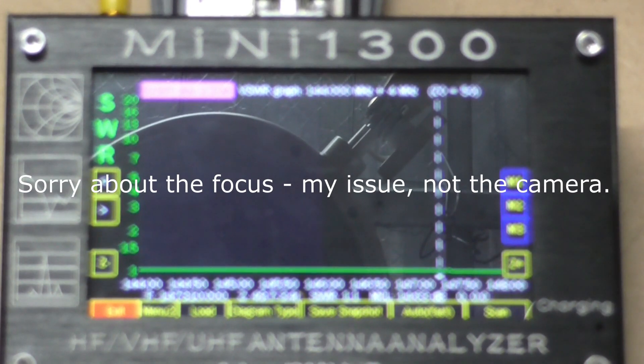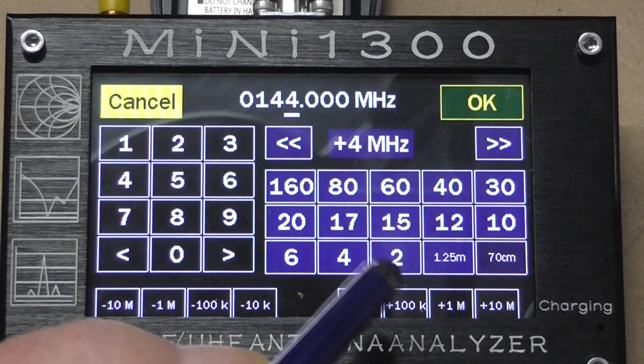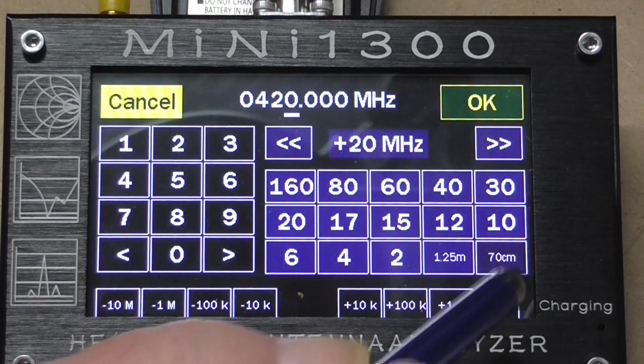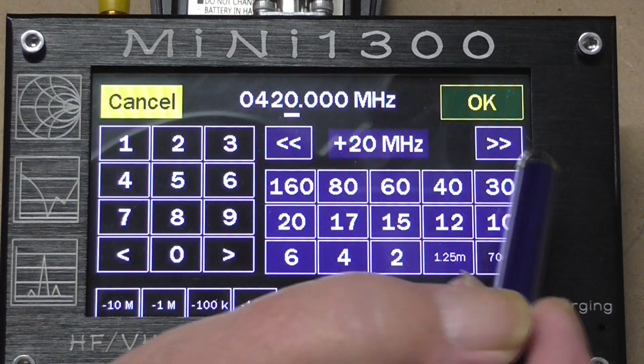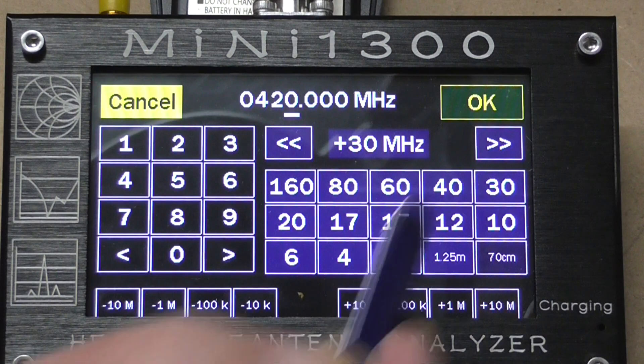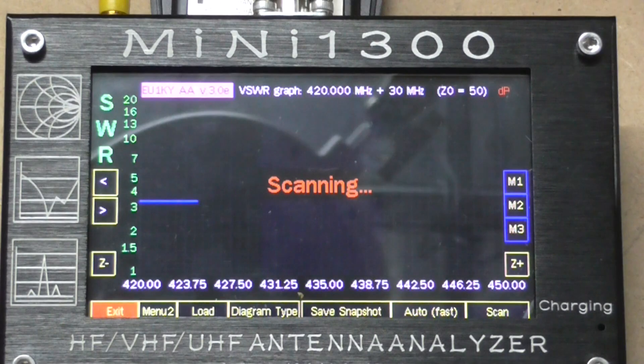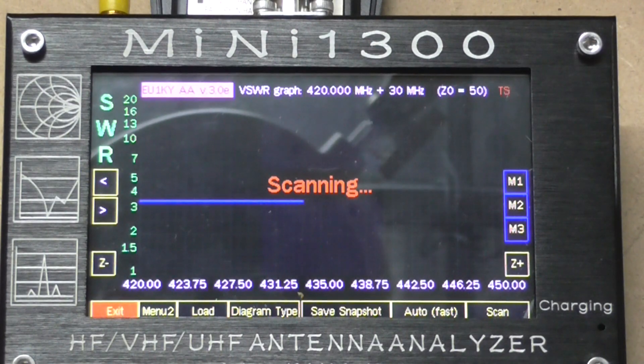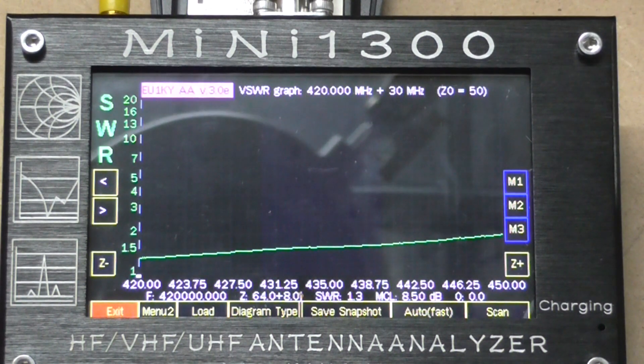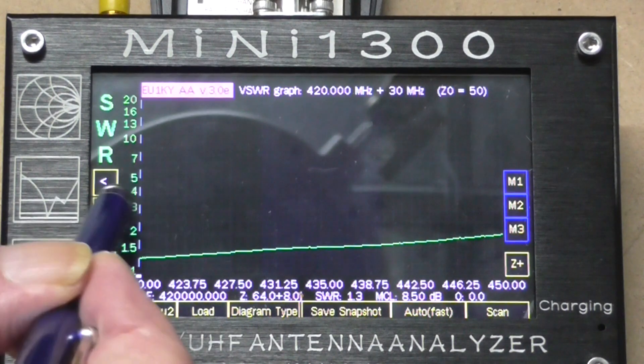Let's step up to 70 centimeters - 420 to 450, so I want 30 megs there. Scan that. We're going to notice this is where things aren't quite the same. So if we turn on our indicator...